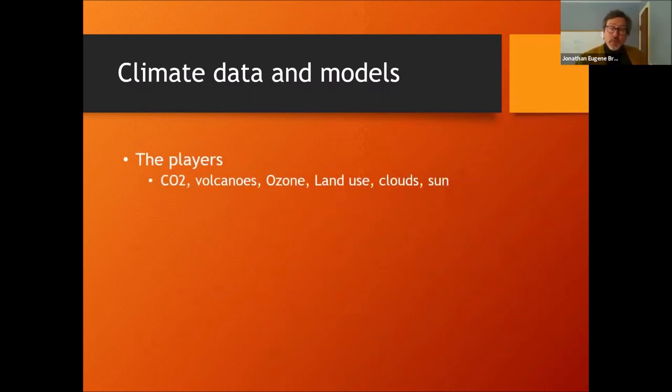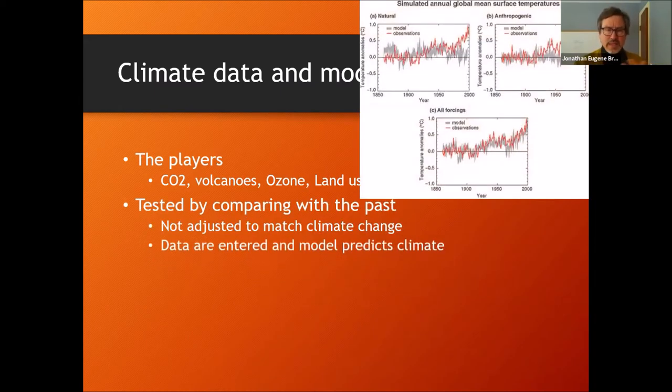When we think, and this now is looking ahead to the readings for Friday, of all the different, as Richard Alley talks about, the different soccer players, the different players on the ground that are forcing that ball to move in a certain direction. We've got carbon dioxide, volcanoes, ozone, land use, sun, clouds, all these different things that could play a role. And we test these by comparing them with past history.